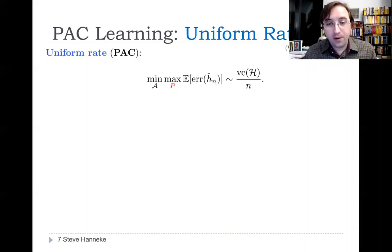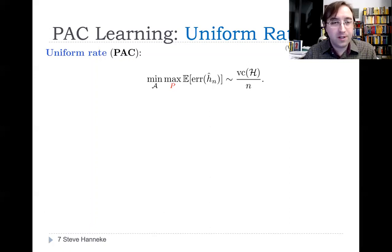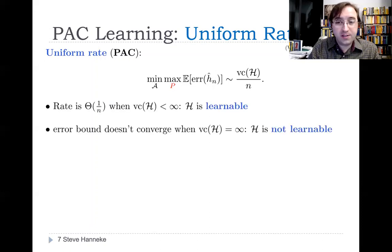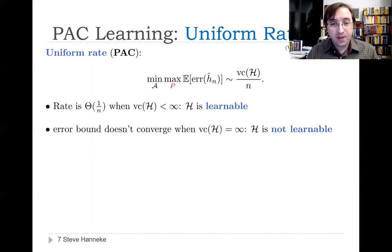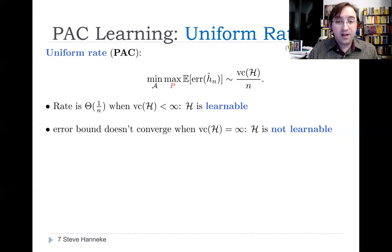This is called a uniform rate because it gives a bound that holds simultaneously for all realizable distributions. Based on this result, we can see there's a fundamental dichotomy in PAC learning. If the VC dimension is finite, the optimal rate of convergence is one over n, and we say the class H is learnable. Otherwise, if the VC dimension is infinite, the error bound doesn't converge, and we say the class H is not learnable. So that's a nice simple picture of generalization.